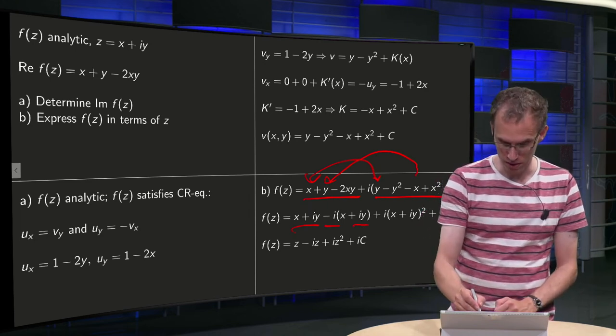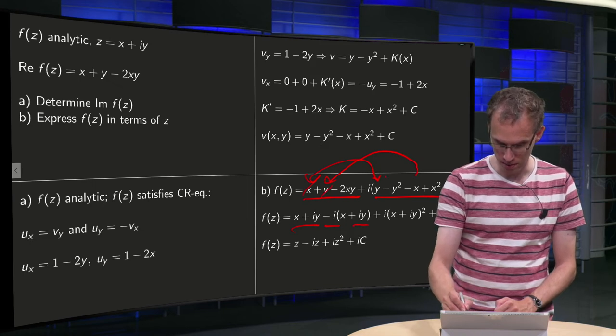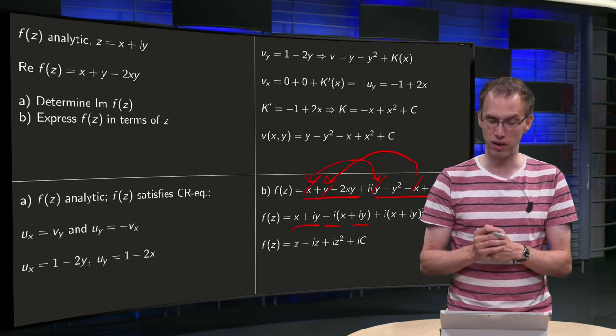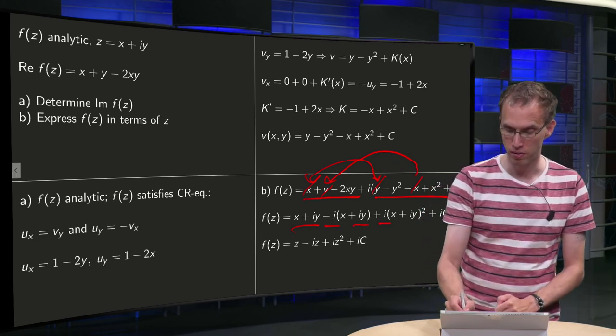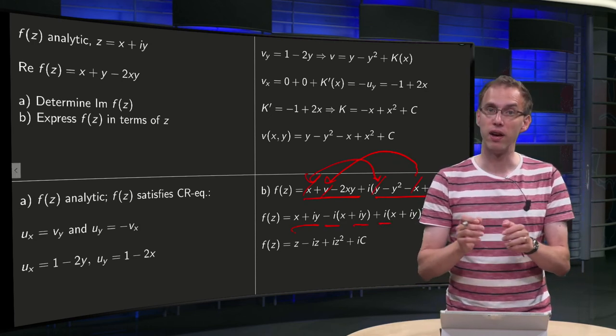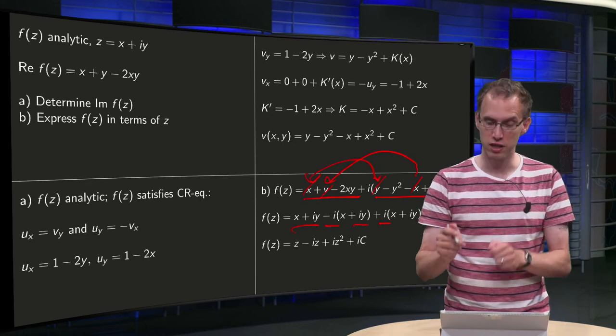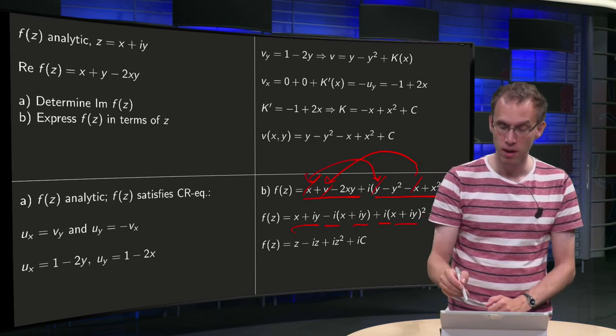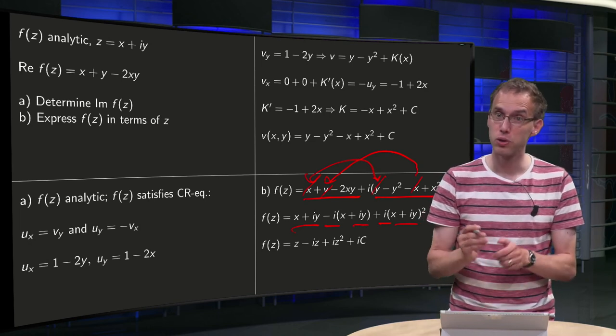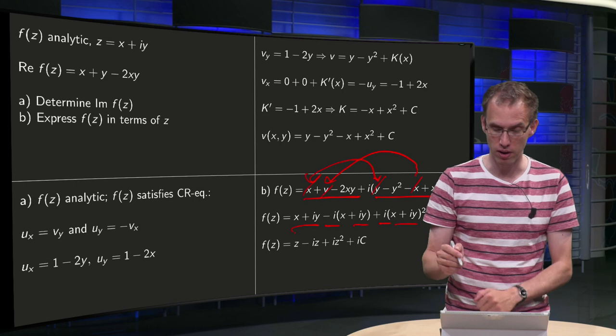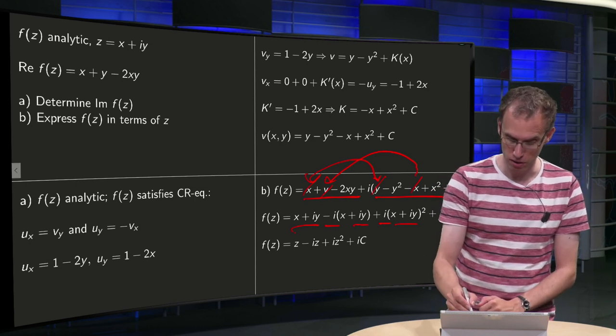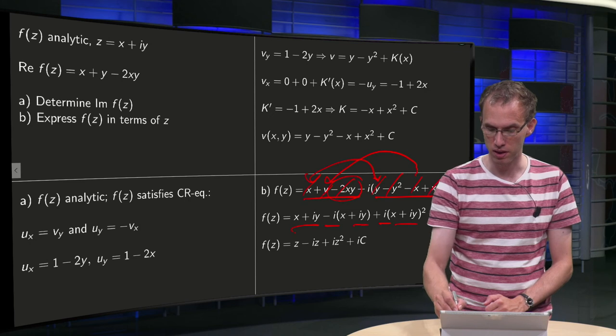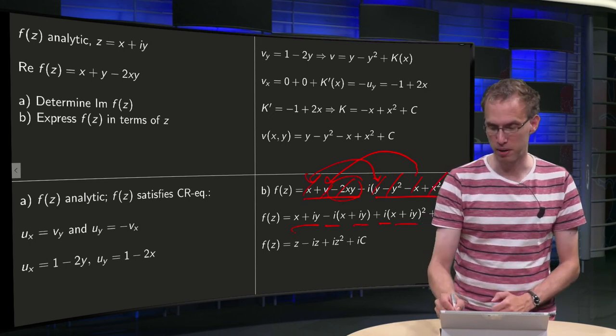So we are done now with this term, this term, this term and that term, and then you see we have x² - y² times iy, so we take iy, and then we get (x + iy)² plus 2xy·i, but that is a term we also have over here, so now we have taken care of all terms, because that takes care of those three terms, plus iC of course.